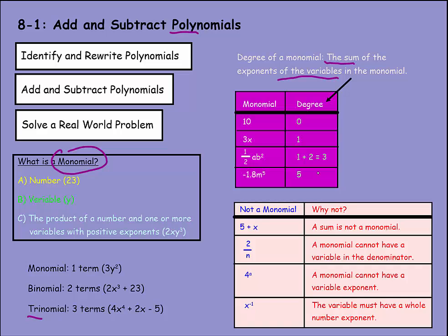Not everything is a monomial, however, so let's look at these and find out why they are not monomials. 5 + x is not a monomial, because monomial means one. I have two monomials here, making it a binomial. Whenever you add a sum, it's not a monomial, or a difference either. We also have 2 divided by n, or 2/n as a fraction. That's not a monomial, because a monomial cannot have a variable in the denominator. We also can't have 4^a, or 4 to a variable power. Then we have x^-1. That's not a monomial either, because of this negative 1 here. The variable must have a whole number exponent.